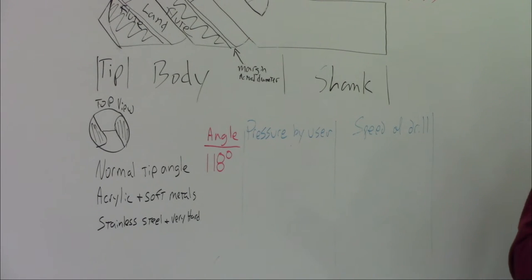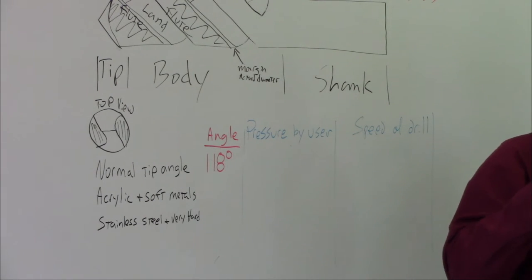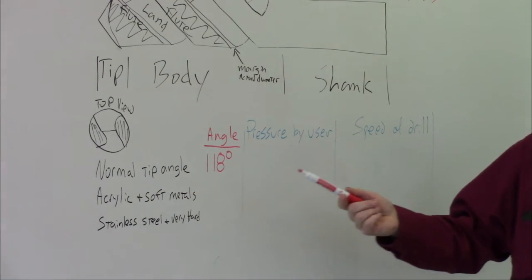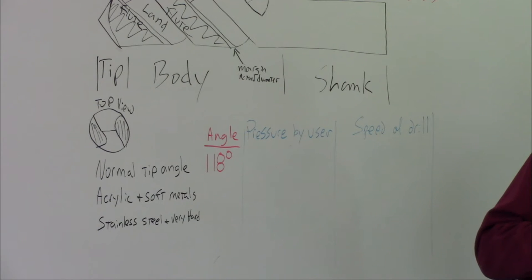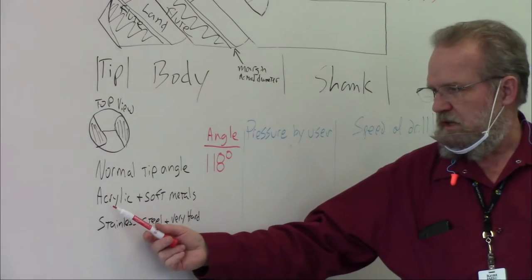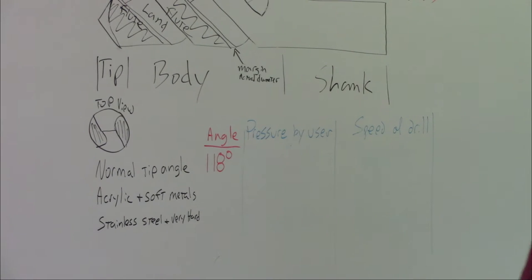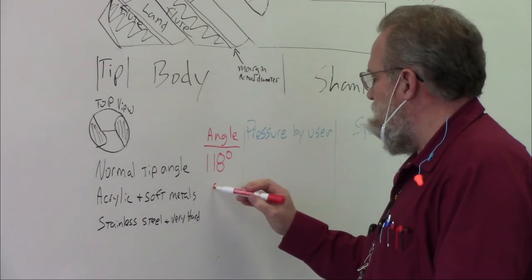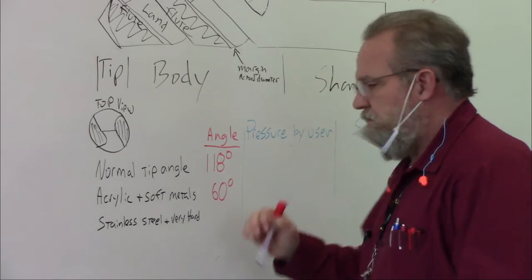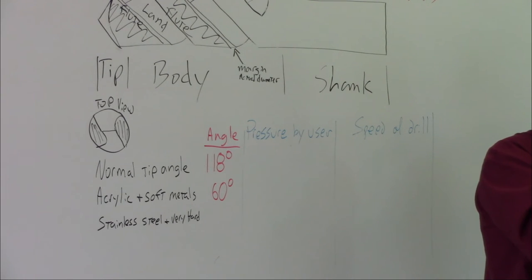118 degrees. That is the normal angle on most of the drill bits you will find and buy. That is for, that drills most everything that you will ever have to drill. It doesn't drill masonry. It doesn't drill other soft things. Acrylic and soft materials, any idea what that will be? It's 60 degrees. You want a sharper angle. 60 degrees is what acrylic bits are cut to, very sharp angle.